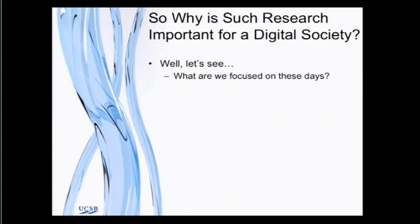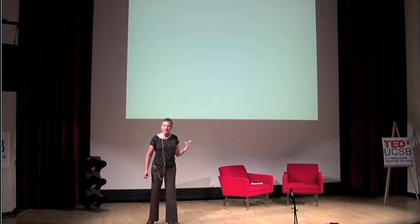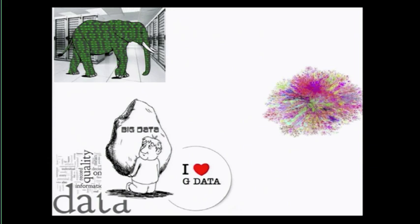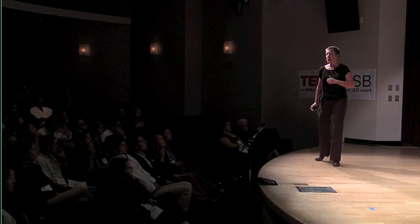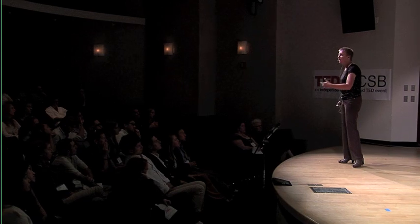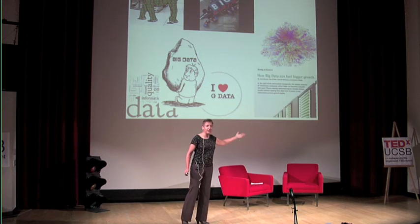The second part of my title was this digital society thing. So why would this research be important for the digital society? Well, let's think about what is important today about our digital society. Every time I go to the internet or check my email or watch television, they're talking about this thing called big data. Big data is everywhere. Businesses are producing data, you are producing data — you have all your music, images, and videos out there. There's internet data, social networking data. Data is everywhere.